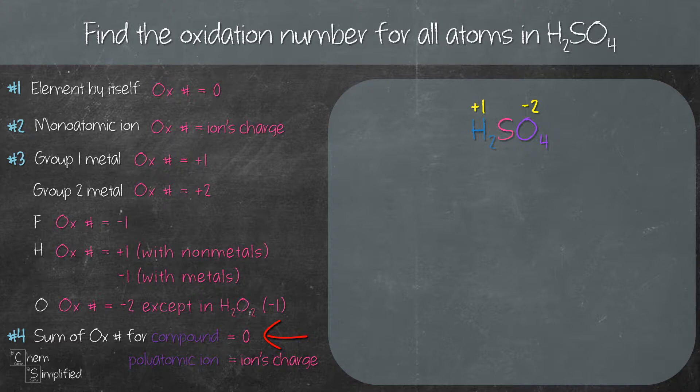What we have, H2SO4, is a compound, so we can go ahead and use this rule. We have two times positive one plus X plus four times negative two equals zero.